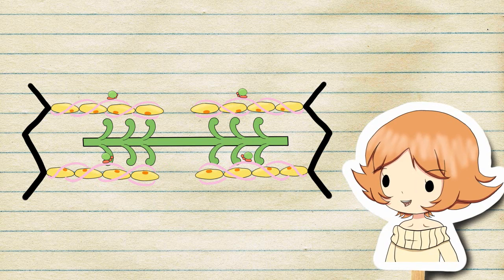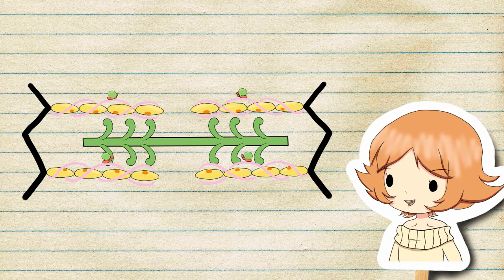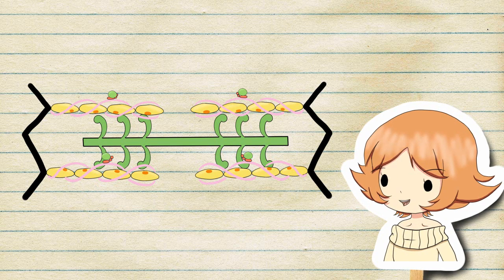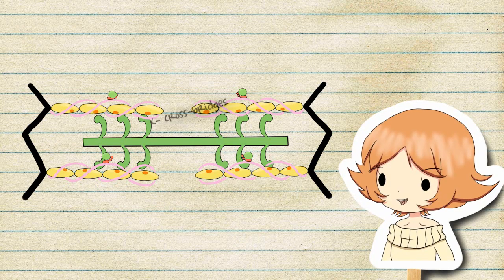This allows the myosin heads on the myosin filaments to bind to the exposed binding sites on the actin myofilaments, forming cross bridges.